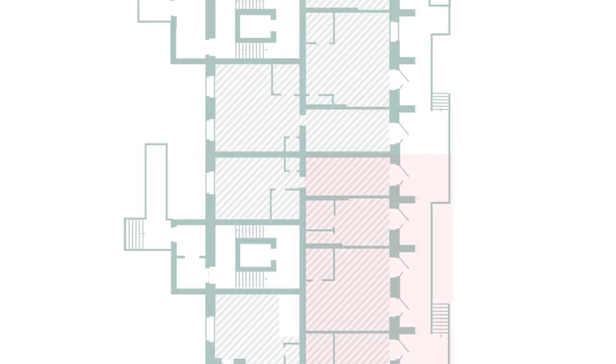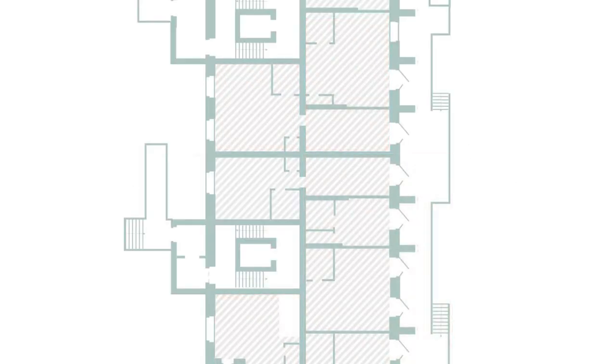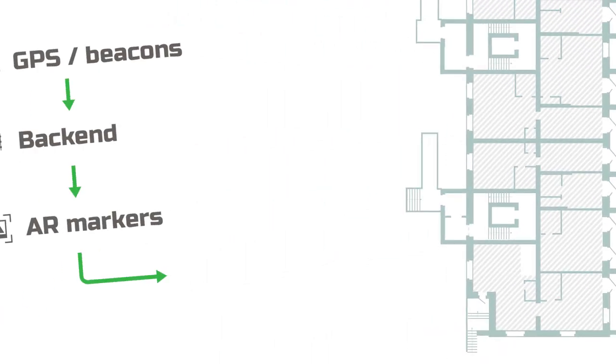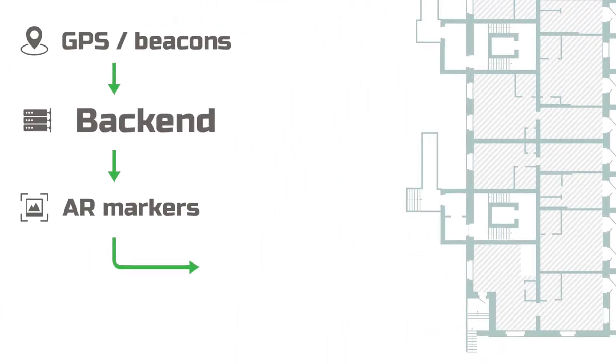And now let's see how it works. Any large campus can be divided into areas. Their plans are stored on the back end, along with all the markers or reference images with coordinates, and a list of destinations.